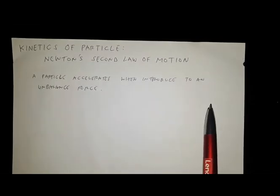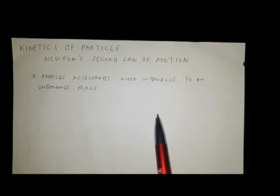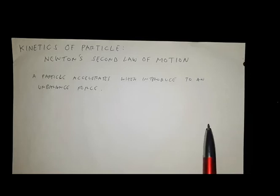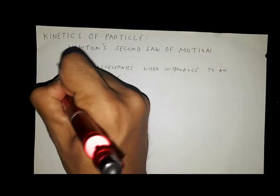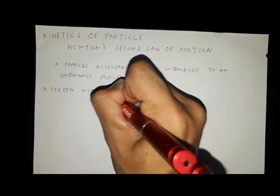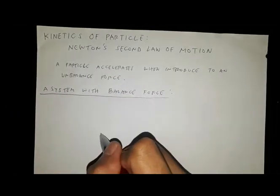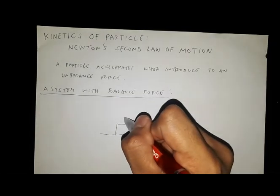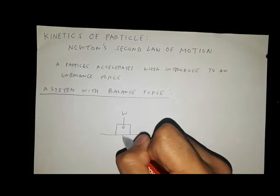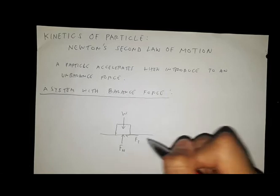A particle with a balanced force will remain stationary or at rest, or moving at a constant velocity if there is no unbalanced force acting on it. Let's draw a system with balanced force — for example, a block resting on a plane, with the weight, the normal force, and the frictional force acting on it.